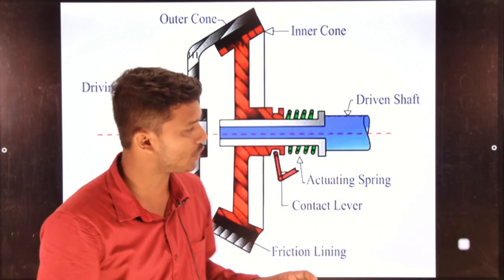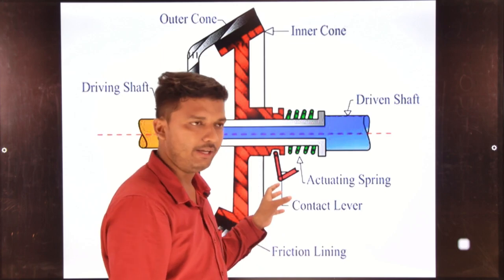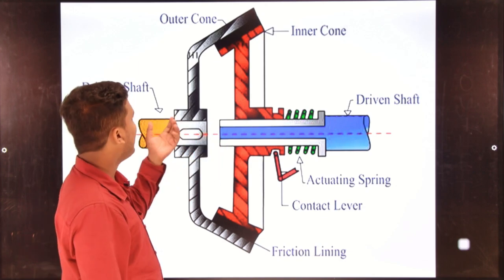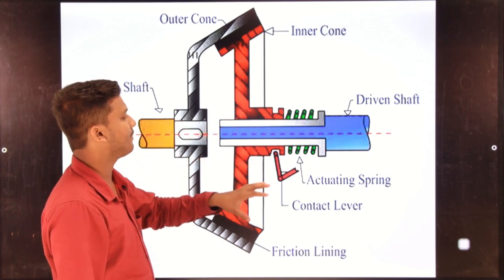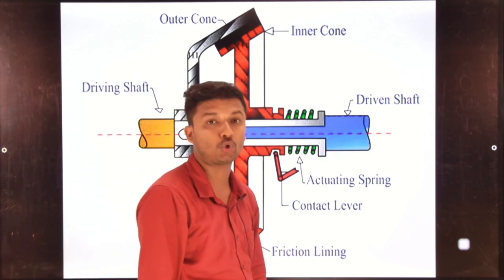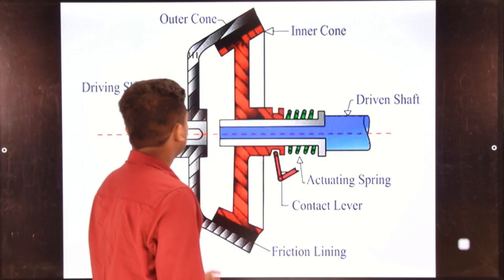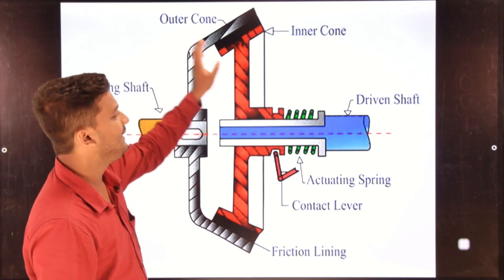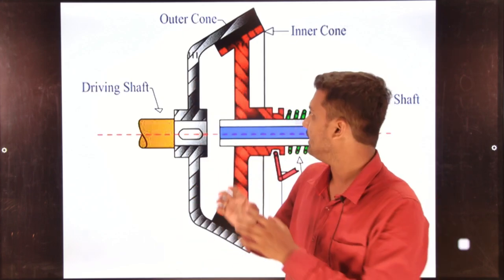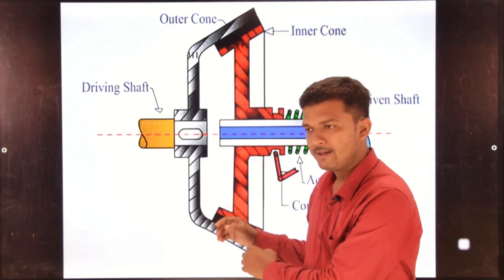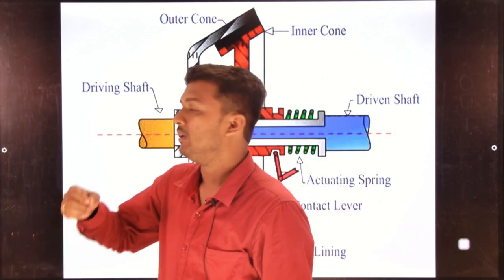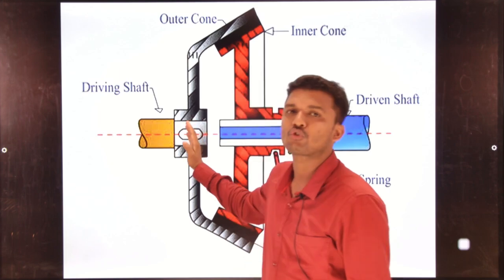This is the whole working principle of a cone clutch system — the friction lining, inner cone, outer cone, driven shaft, and the spring contact system by which it automatically comes into the engaged position. The shape is just like a cone.